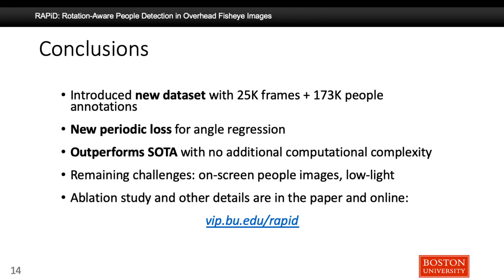To summarize, we introduced a new dataset for people detection and tracking from overhead fisheye videos with 25,000 frames and 173,000 people annotations. For the detection of rotated bounding boxes, we introduced a new periodic loss function for angle regression and showed that our proposed algorithm outperforms state-of-the-art algorithms with no additional computational complexity. Based on our visual evaluation, remaining challenges include on-screen people images and people detection under low illumination. Further details can be found in our paper and website. Thanks for listening.